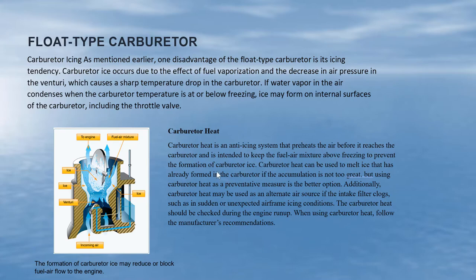Carburetor heat is an anti-icing system that preheats the air before it reaches the carburetor, and is intended to keep the fuel-air mixture above freezing to prevent the formation of carburetor ice. Carburetor heat can also be used to melt ice that has already formed in a carburetor, if the accumulation is not too great.